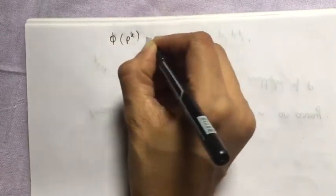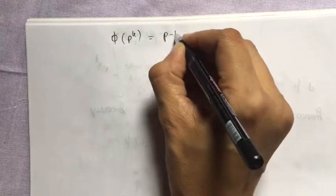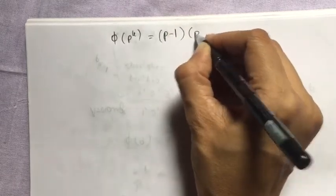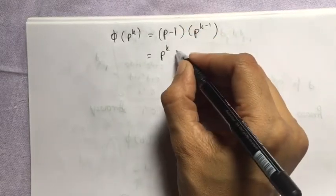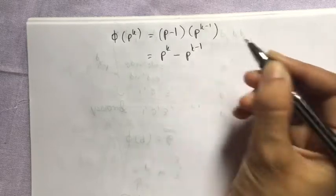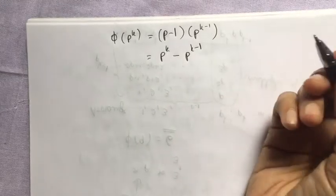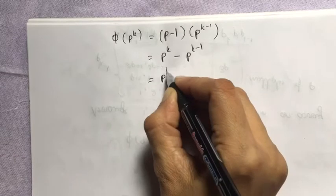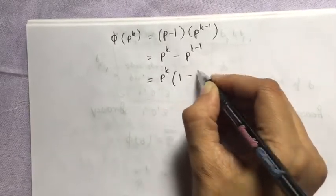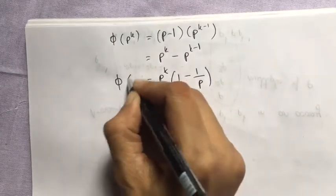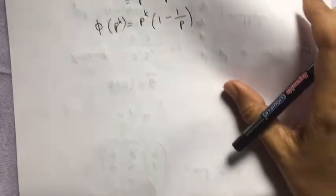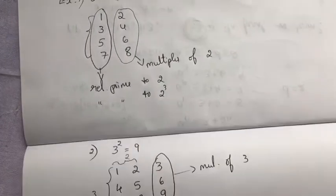Therefore phi(p^k) = (number of columns) × (number of rows) = (p-1) × p^(k-1) = p^k − p^(k-1), which is the same as p^k(1 − 1/p). Hence the proof — this is the formula for phi(p^k).